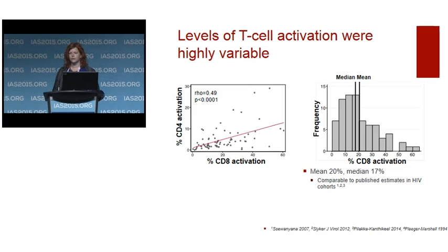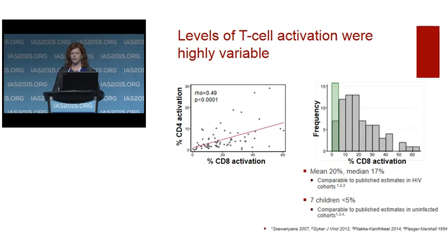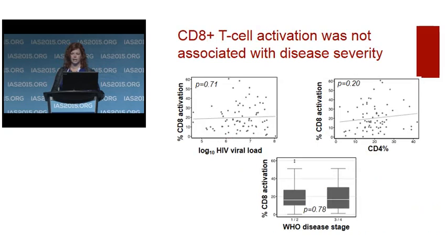The second aim was to quantify the association between T cell activation at baseline and subsequent mortality, pre and post ART. We again used baseline CD8 activation. There were 24 deaths in the cohort, 12 before ART could be initiated. We used two a priori thresholds: the median — hypothesizing that greater than median activation would be associated with increased mortality — and 5%, hypothesizing that less than 5% activation would be associated with decreased mortality.